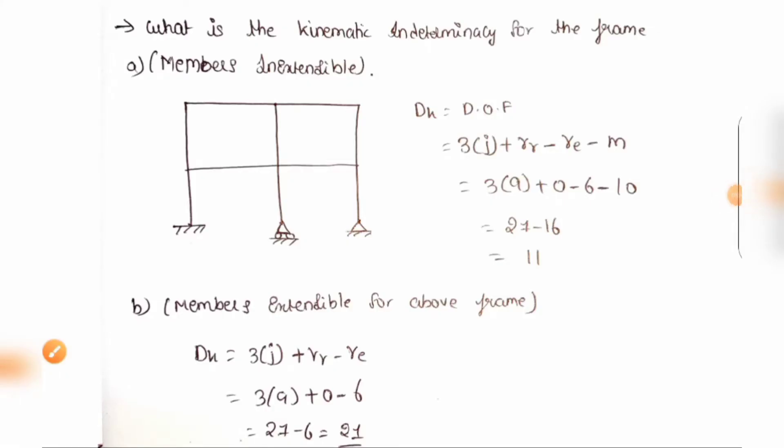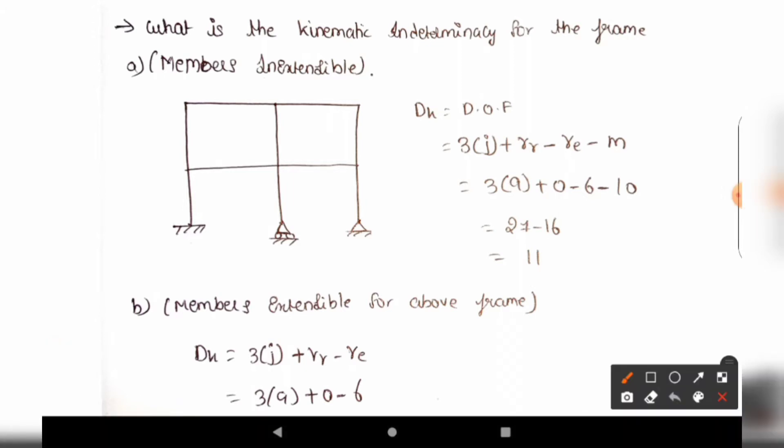Hello everyone, welcome to Civil Engineering. Welcome back to this structural analysis revision video. In this video, we will cover kinematic indeterminacy with three examples, following on from the static indeterminacy. For kinematic indeterminacy of a frame, there are two cases: members inextensible and members extensible.